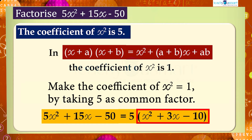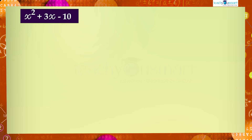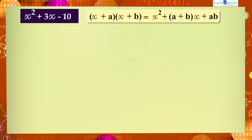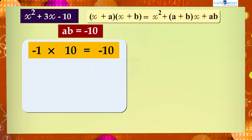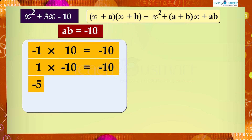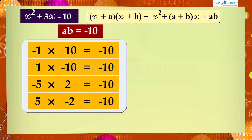Now we will factorize x² + 3x − 10 using the identity (x + a)(x + b) = x² + (a + b)x + ab. We have ab = −10, so the possibilities are: (−1) × 10 = −10; 1 × (−10) = −10; (−5) × 2 = −10; and 5 × (−2) = −10.